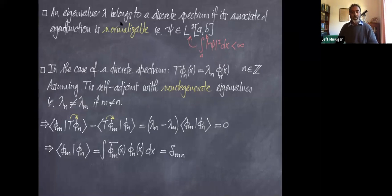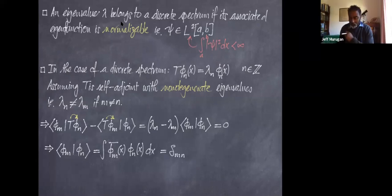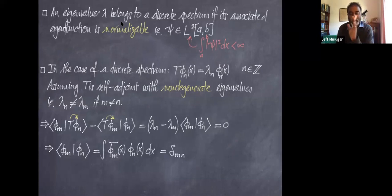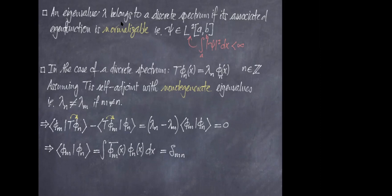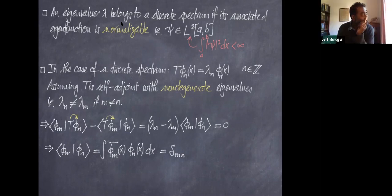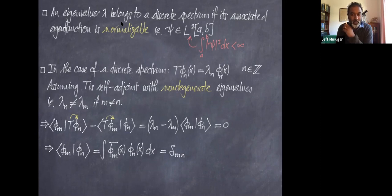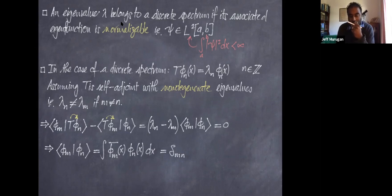A student asks whether we're assuming the eigenvalues are all real, and whether a Hermitian operator implies real eigenvalues. The answer is yes — a Hermitian operator implies real eigenvalues. However, self-adjoint is not the same as Hermitian in all cases. The discussion here is more general, and the distinction can be elaborated on after the lecture.